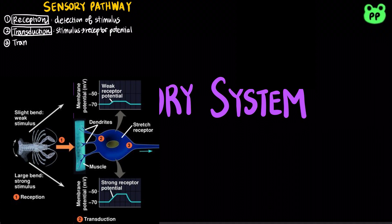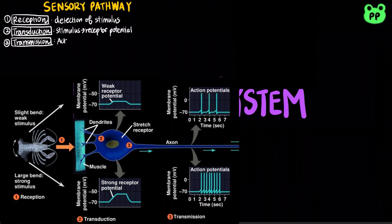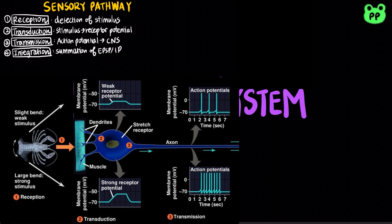After energy has been transduced into a receptor potential, some sensory cells generate the transmission of action potentials to the central nervous system. Then, the central nervous system integrates the sensory information, usually through summation of excitatory or inhibitory postsynaptic potentials.